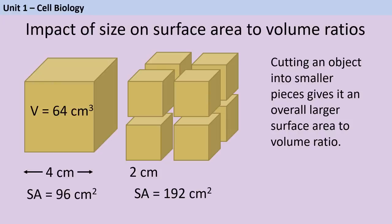There's a crossover here with chemistry GCSE: if you cut an object into smaller pieces or give it folds, this gives it a bigger surface area to volume ratio, which speeds up transport or chemical reactions. For example, a cube with a volume of 64 cm³ (4×4×4) has a surface area of 96 cm² (6 faces × 16 cm²). If you cut it in half in all three dimensions to make 8 smaller cubes, the volume stays the same but the surface area of those 8 cubes together is now 192 cm² — by cutting it in half on all three dimensions, you've doubled the surface area to volume ratio.